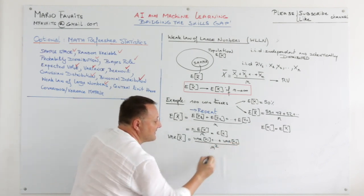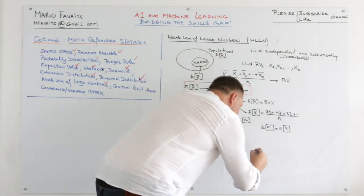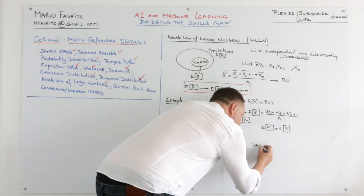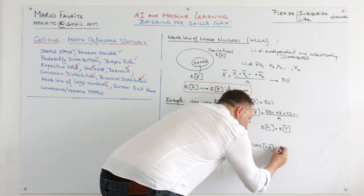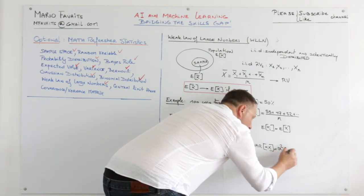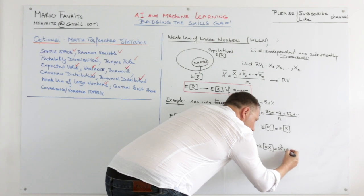Divided by n squared. Well we see that the variance of alpha X equals alpha squared variance of X.